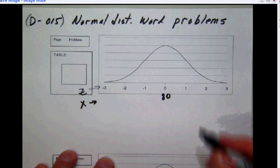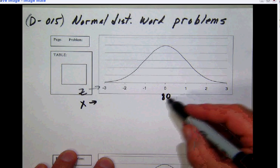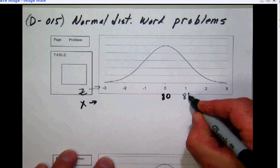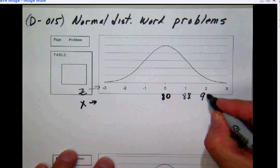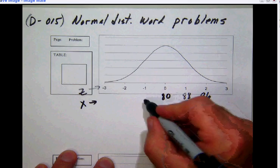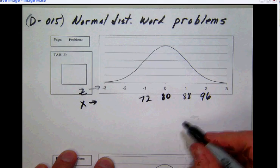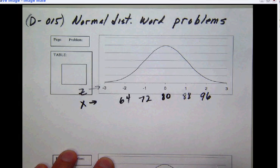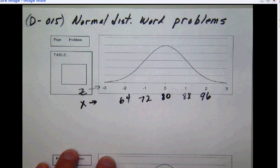And we have a standard deviation of 8, so we can go by 8's here. So 80 plus 8 is 88, plus 8 it'd be 96. Going the other way, this would be 72 and 64, and so on. We could do them all, but that's probably enough for now.